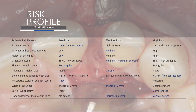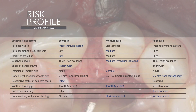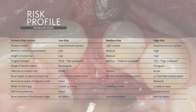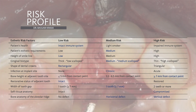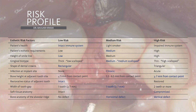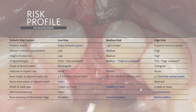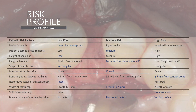Looking at the risk profile, the patient has a low smile line. If we look at the soft tissue, we have primarily blunted papilla, almost highly scalloped, medium periodontal phenotype. The teeth are more rectangular in shape and we do have some inflammation present in the area.